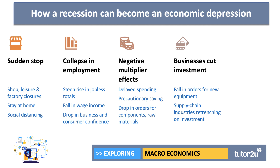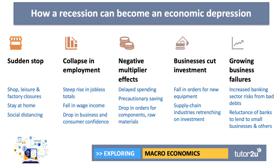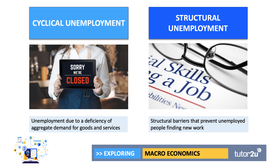Businesses may decide to cancel or postpone capital investment spending, leading to a fall in demand for new machinery, equipment, hardware, and software. Supply chain industries may also cut back on investment. The big risk is that this becomes systemic: businesses start to fail, bad debts rise in the banking system, making commercial banks more reluctant to lend to smaller businesses. So there is clearly a fear that the recession the UK is in could deepen and worsen, and that mass unemployment could be the consequence.